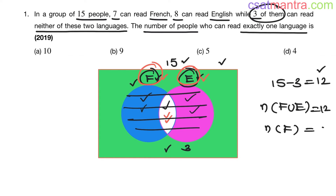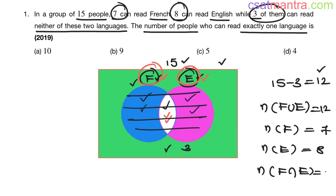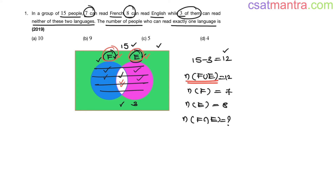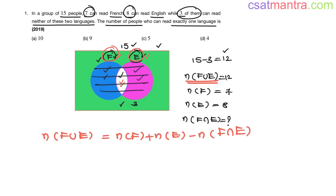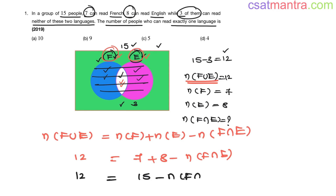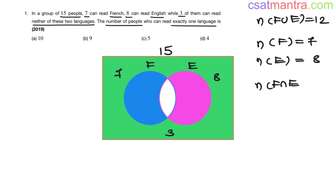Number of people who read French is 7 — it is given. Number of people who read English is 8 — also given. We want the number of people who read both French and English. We have the formula: N(F ∪ E) = N(F) + N(E) − N(F ∩ E). So 12 = 7 + 8 − N(F ∩ E), which gives N(F ∩ E) = 15 − 12 = 3. So N(F ∩ E) is 3 — the people who read both French and English.